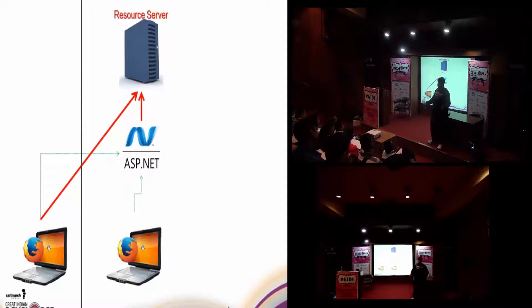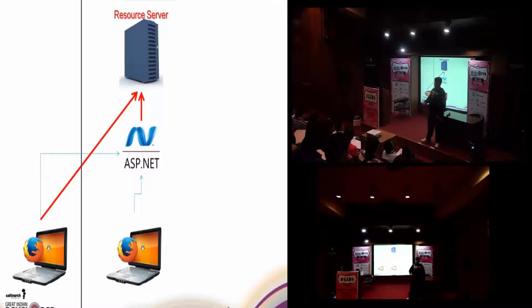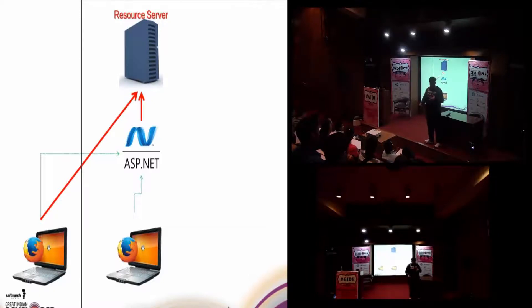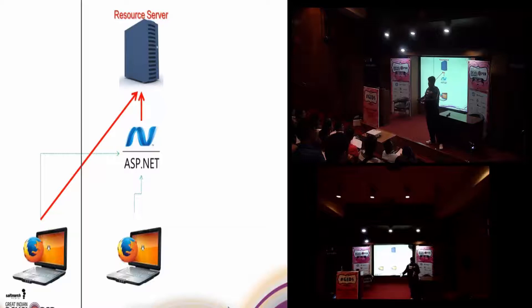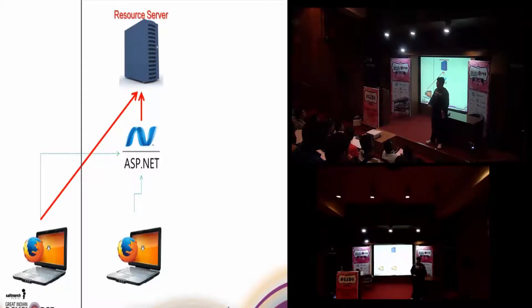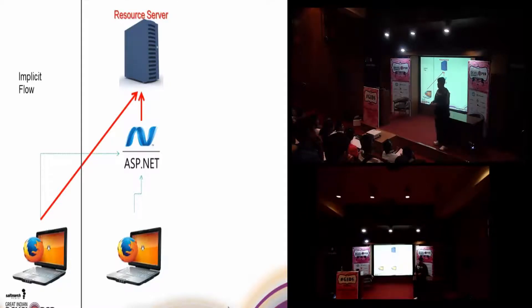Or traditionally, you could have your browser not know anything about it and have your web server do the dialogue with the resource server — in this case your web server becomes the client. There are different sets of steps to follow for each approach, and these steps are called flows. The first approach — doing it with JavaScript — is called implicit flow, whereas the second one is called the authorization code flow.